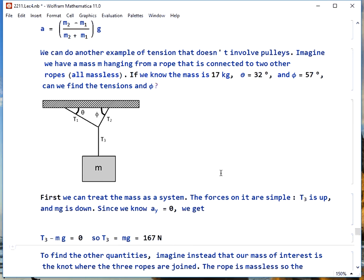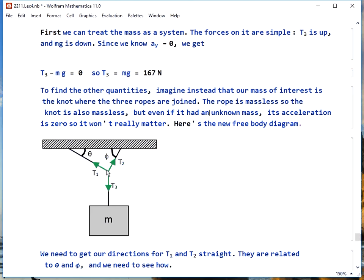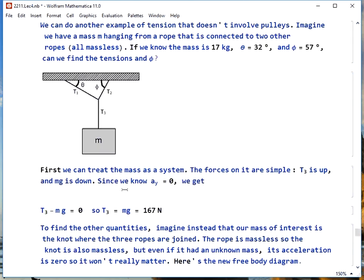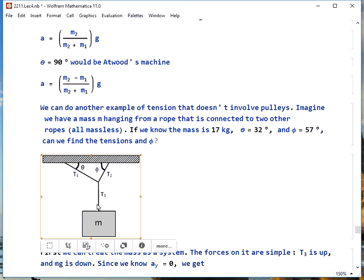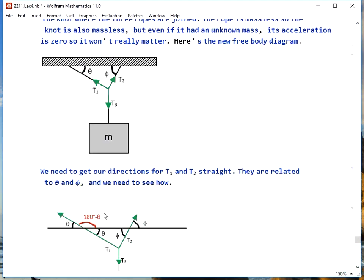To find the other things, T1 and T2, we can imagine that instead of the mass being our system, the knot is our system, where the three ropes are connected. The rope is massless, so the knot also has to be massless. But even if we say it has a mass that we don't know, it doesn't matter because its acceleration will be 0, so the ma on the right will always be 0. So here's our new free body diagram. Note the tensions are all pulling away from the knot, even though here T3 was pointing towards the knot because we were interested in m.